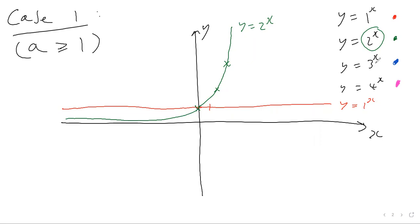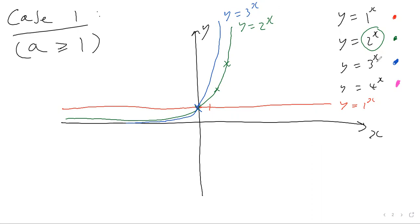Now the blue one: y equals three to the power of x. When you substitute x equals zero, you get one again, so it crosses through at y equals one. When you plug in bigger x values — x equals one gives three, x equals two gives nine — you get an exponential graph, but steeper than y equals two to the x because it grows faster. On the negative side, plugging in x equals minus one gives one third, which is smaller than one half, so you get shallower y values compared with y equals two to the x.